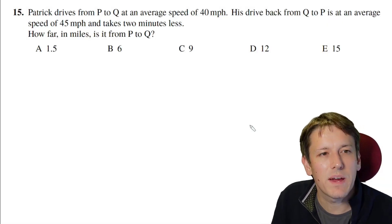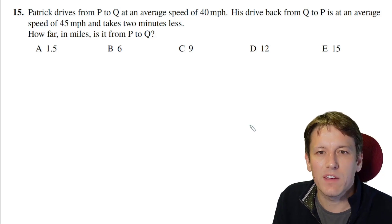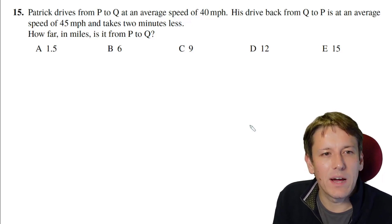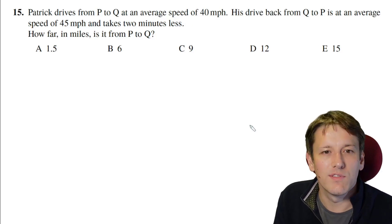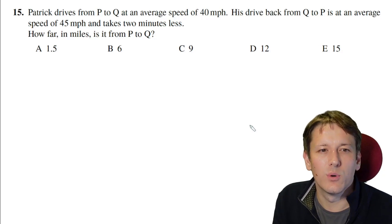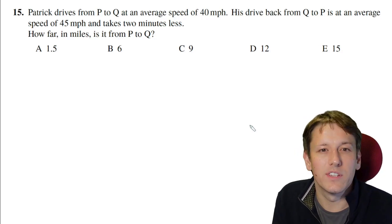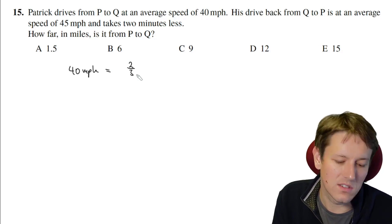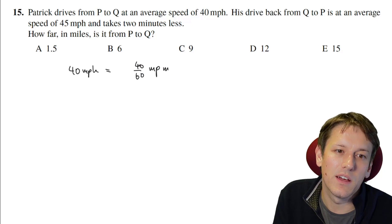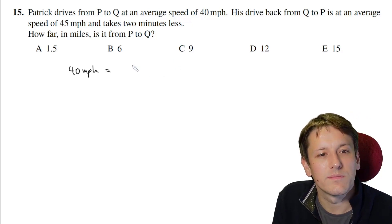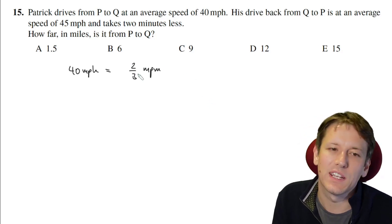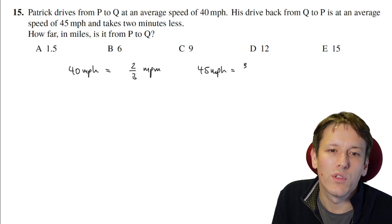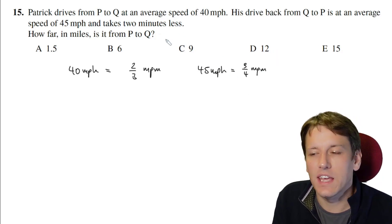I've got a tricky question here. It says, Patrick drives from P to Q at an average speed of 40 miles an hour. And the drive back from Q to P is at an average speed of 45 miles per hour, and takes two minutes less. Now, a couple of things to notice here, the speeds are miles per hour, and the time is in minutes here. So we definitely want to convert either the speeds to miles per minute, or two minutes into hours. So you could say two minutes is 1/30th of an hour. I think actually what I'm going to do here is say instead that 40 miles per hour is 40 over 60, which is two thirds, 40 over 60 miles per minute. And so that's two thirds miles per minute, and 45 miles per hour, that means you're going to go 45 over 60, or three quarters of a mile per minute. And now I can just say everything's in miles and minutes here.